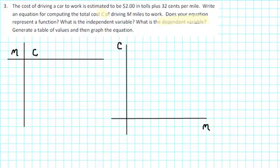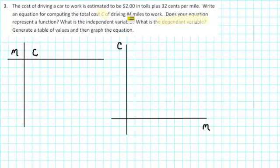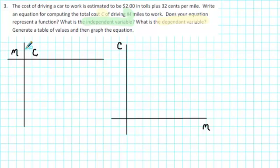The other variable is the independent variable. So in this case, the other variable is m — m is the independent variable. At this point, we can make a table of values to get a feeling for the problem situation.